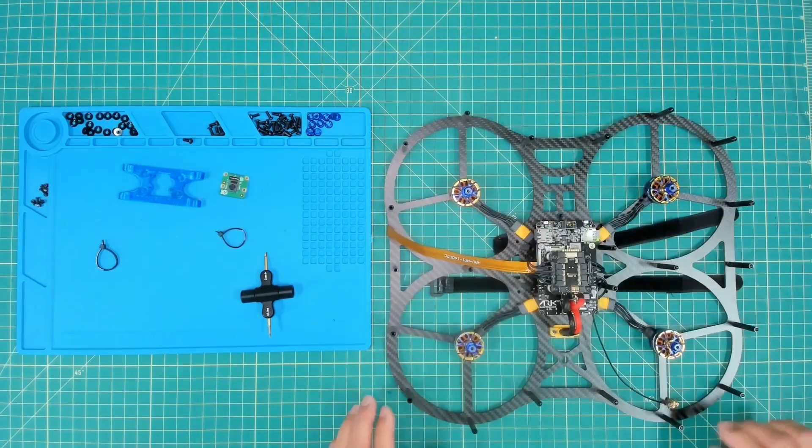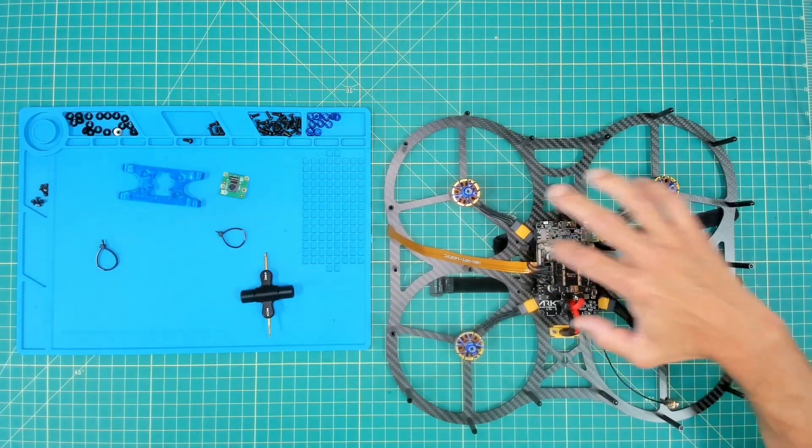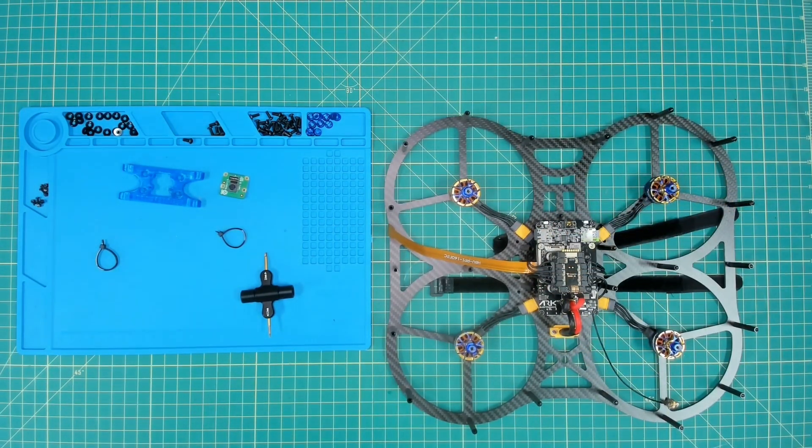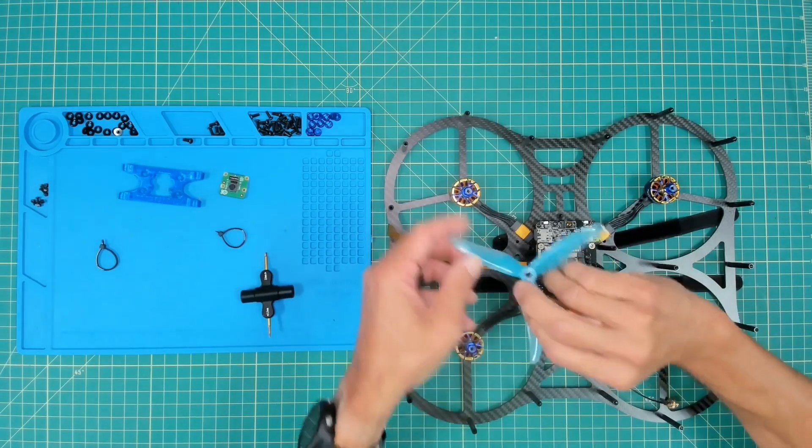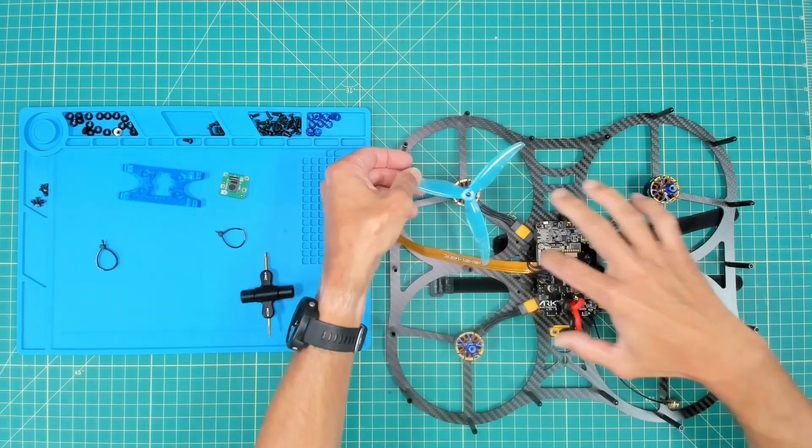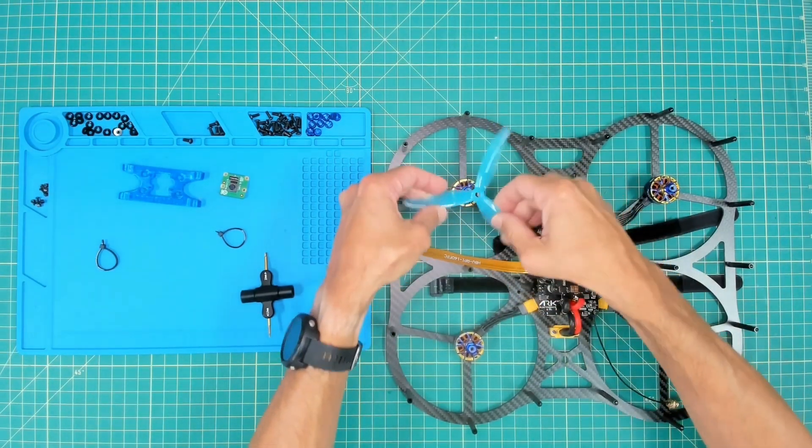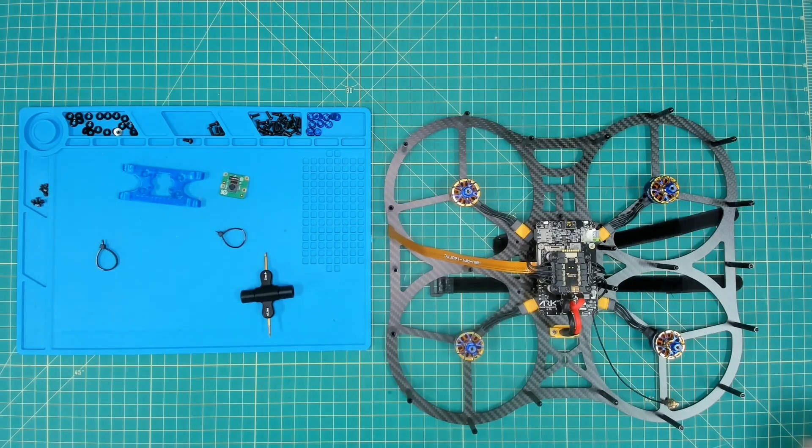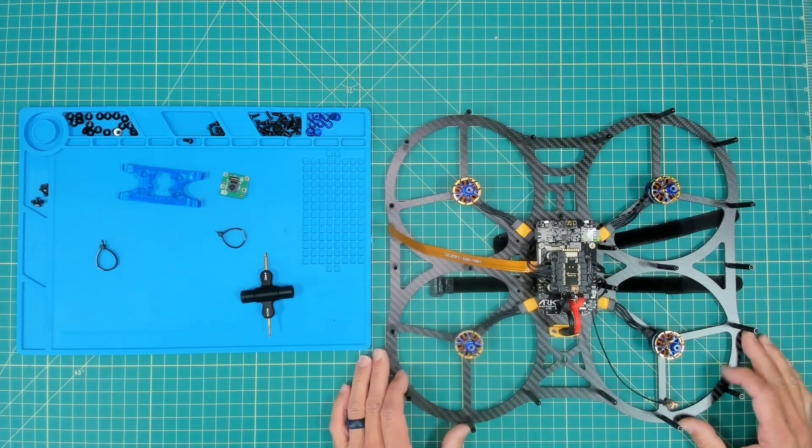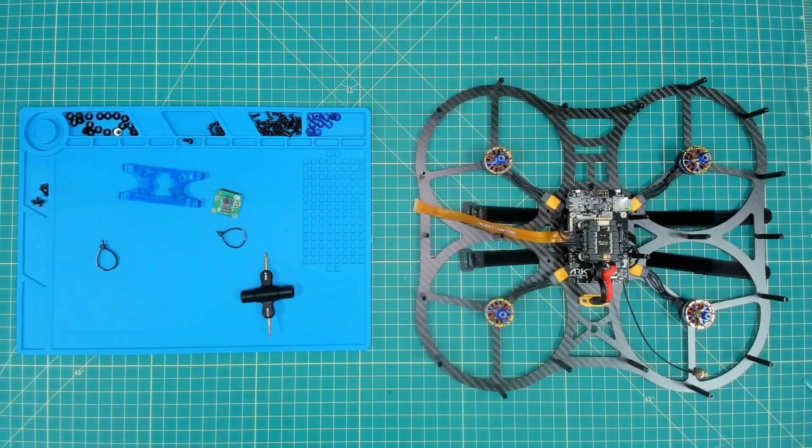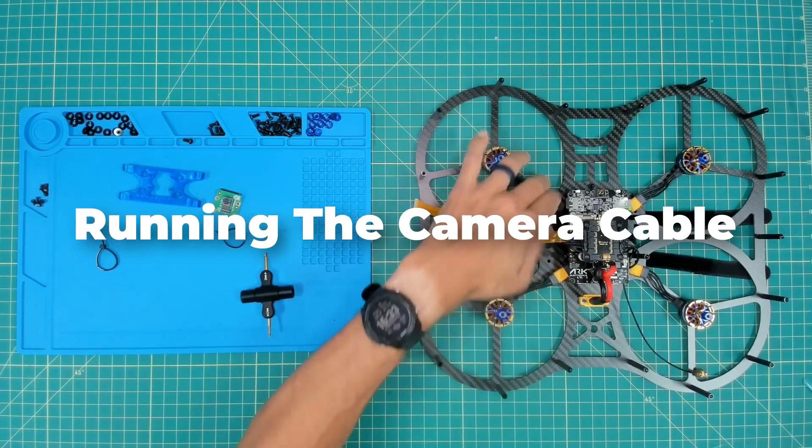Then our last motor. You'll see that these are routed inside of these standoffs. When we get to the part of the build where we place our propellers, we want to make sure we have everything clear so there are no obstructions for our propellers to spin and give us proper thrust.